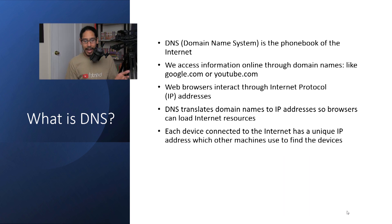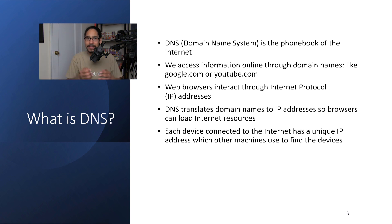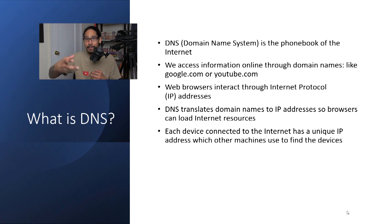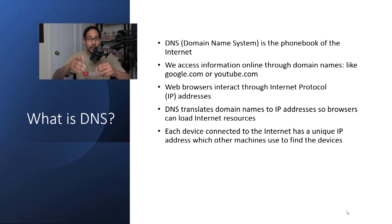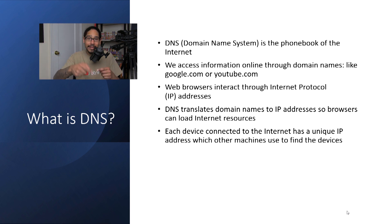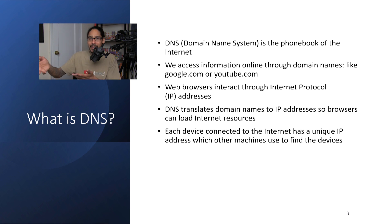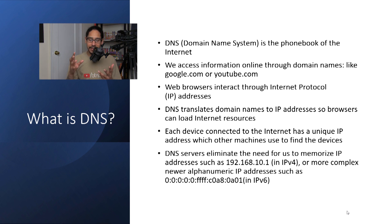Each device connected to the internet has a unique IP address, which other machines use to find that particular device. For example, if you are working in IT as a system administrator, you most likely have a web server inside your LAN. That web server has a unique IP address — that's how people will access it — but they're not going to type in that IP address in the browser. Most likely you're going to provide a URL or a domain name to your clients, so when they type it in the browser, it translates to that IP address on your LAN server and loads your website.